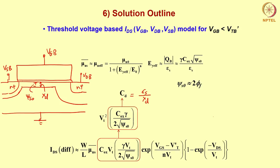This is your inversion layer which is very weak. The concentration of electrons in the inversion layer varies from source to drain, and the mobility of these electrons is this average surface mobility.